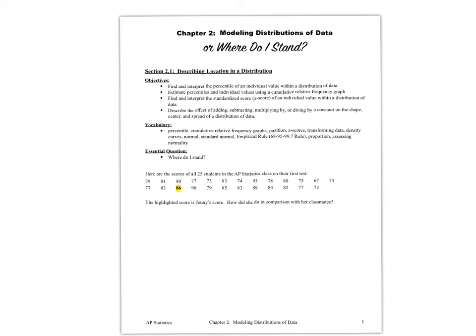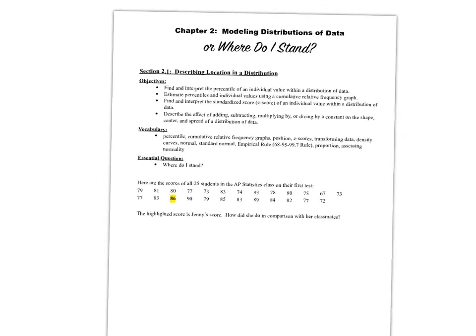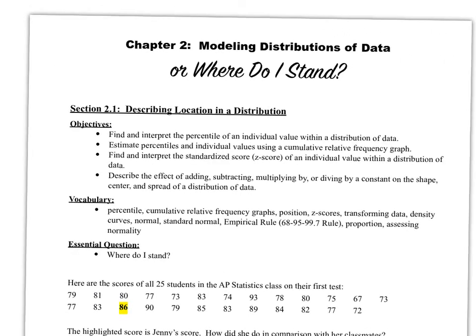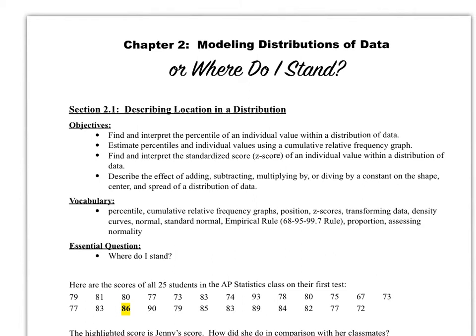Our objectives for this section are: find and interpret the percentile of an individual value within a distribution of data — basically, where do I stand in the group? Estimate percentiles and individual values using a cumulative relative frequency graph. Find and interpret the standardized score, also called a z-score, of an individual value within a distribution of data. And describe the effect of a linear transformation — adding, subtracting, multiplying, or dividing by a constant — on the shape, center, and spread of a distribution.